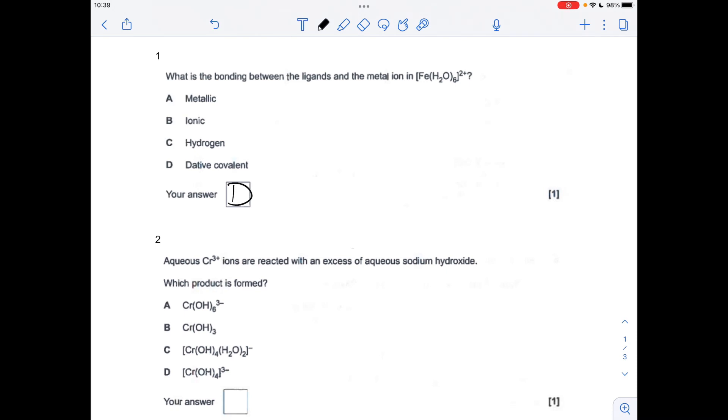Number two: notice it says aqueous chromium 3+ ions are reacted with excess hydroxide. If it was just a small amount you would get the precipitate chromium 3 hydroxide, but that actually dissolves in an excess and you get this ion here, so the answer is A.